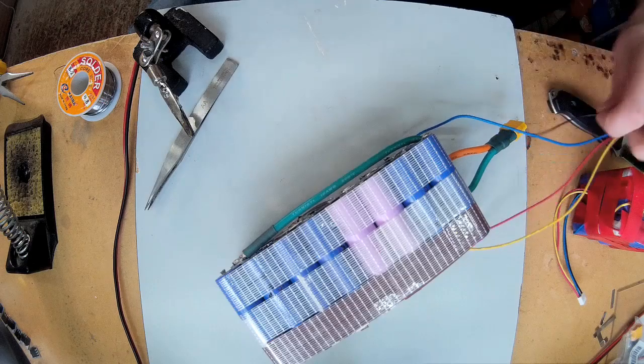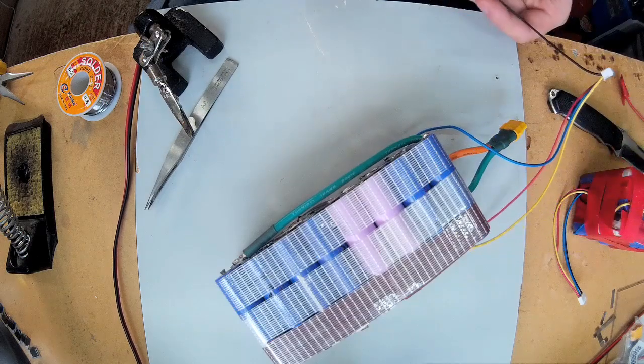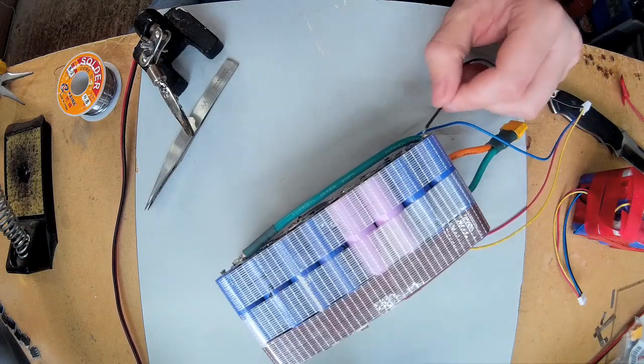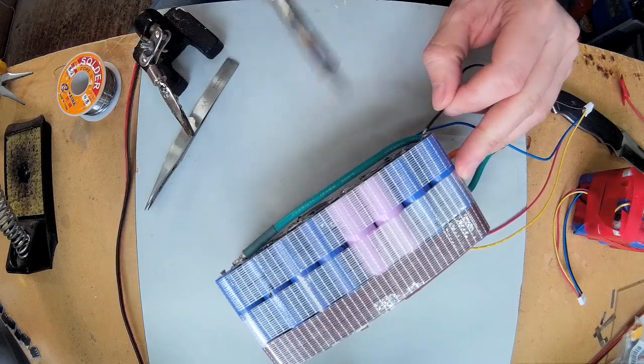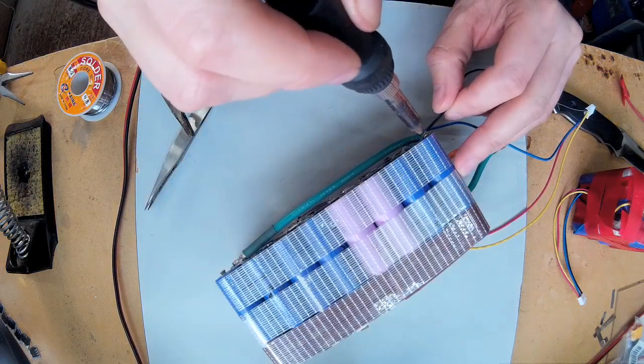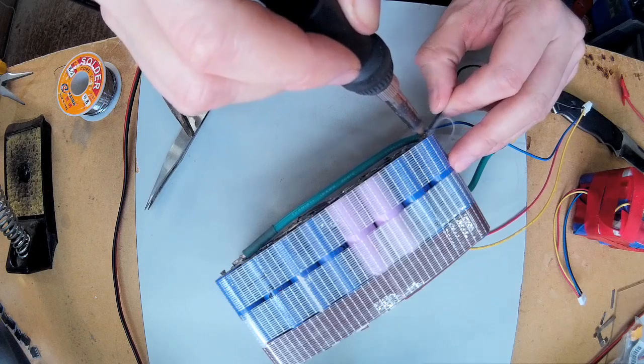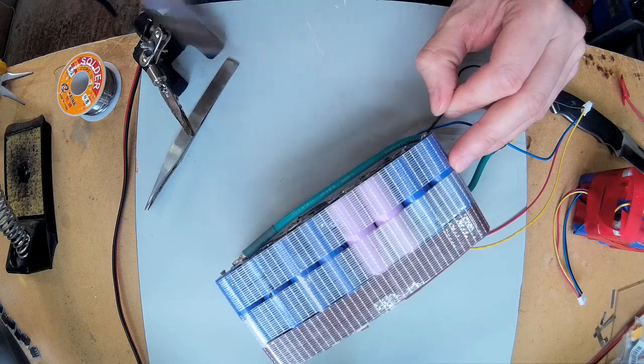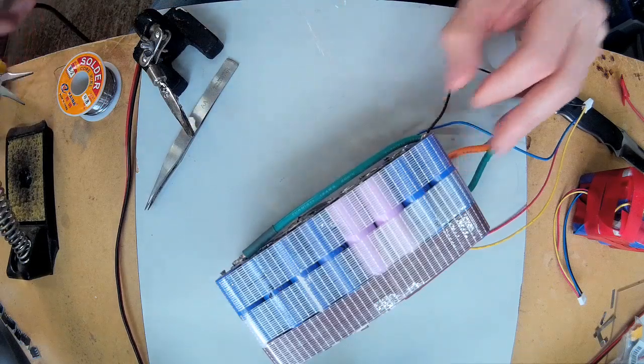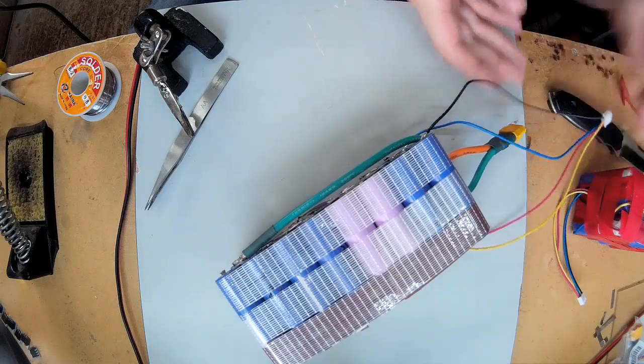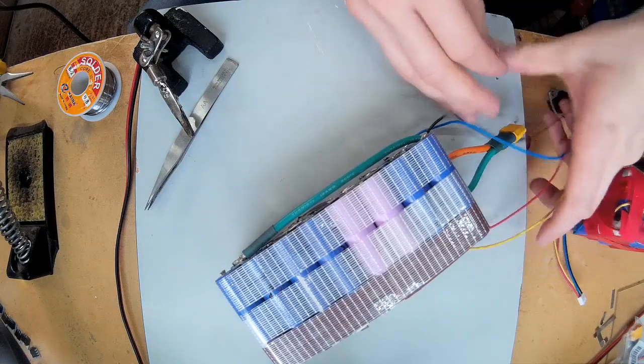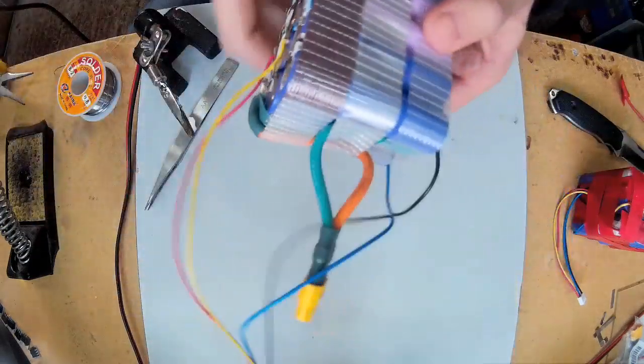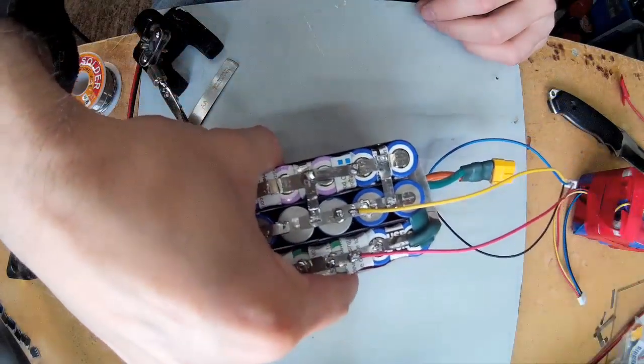And then the final black wire will go to the negative of the last battery pack. I just need to tidy it up with some tape, make sure it's not going to get pulled off, and it should be okay.